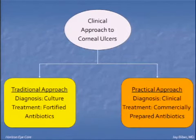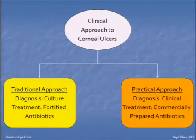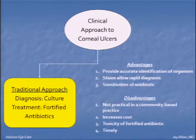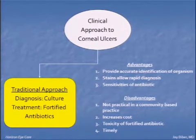Historically, there have been two approaches to corneal ulcers. There's been the traditional approach — culturing and fortified antibiotics — followed by the practical approach, which is more of a clinical diagnosis followed by monotherapy. The advantage of the traditional approach is that you get an accurate diagnosis of the organism. With gram stains, you can find out results within two or three hours after presentation. And in this day and age of resistance, you can tailor your therapy and ensure good sensitivity to that antibiotic.